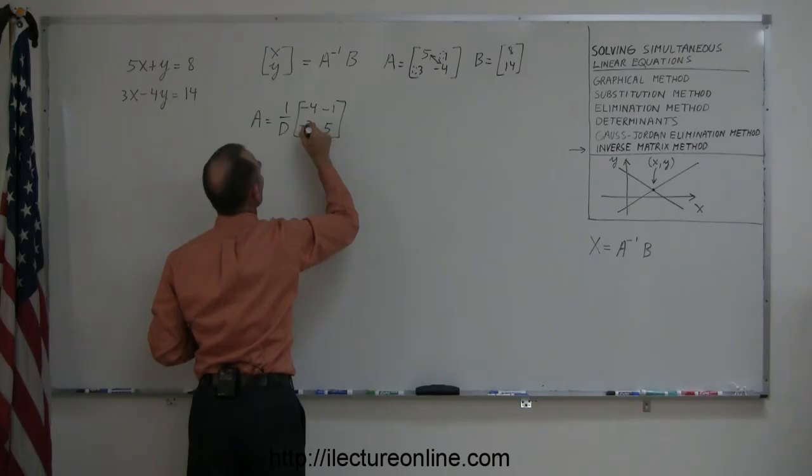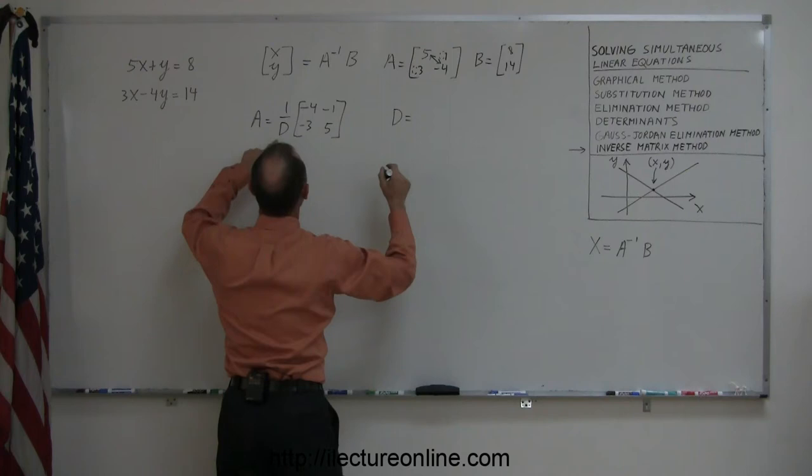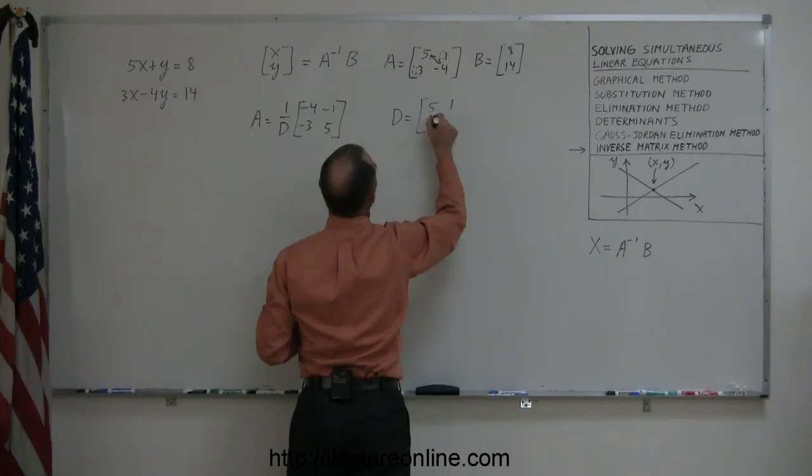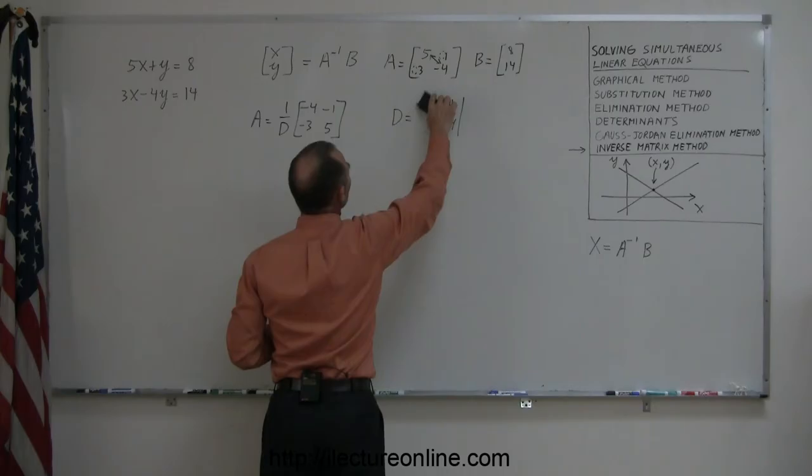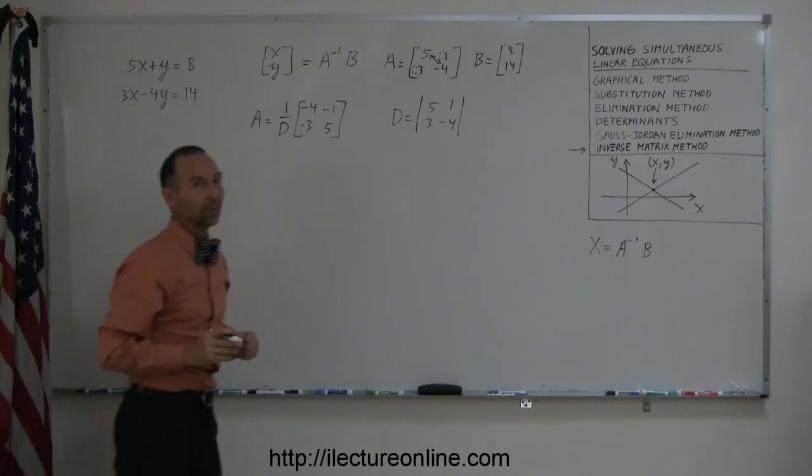And also, the determinant can be found by taking the elements inside the matrix, which is 5, the 1, the 3, and the negative 4, and solving the determinant of that. And the way you can tell that it's a determinant, not a matrix, we use simply the straight lines instead of the little brackets around it. That's how you can tell the difference.